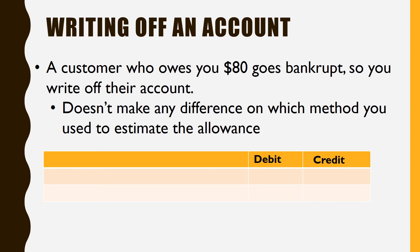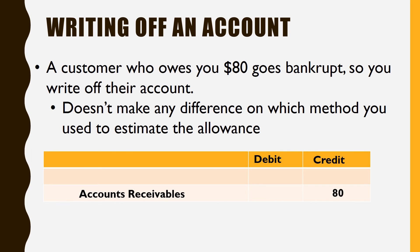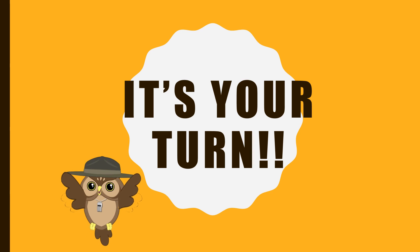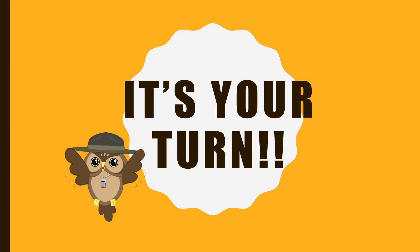If you've watched these in order, you've already heard about writing off an account, so I'll go over that very quickly. All we're going to do is reduce the accounts receivable by the amount we're not going to collect and reduce the allowance for bad debts, because we already accounted for that. The main thing is it doesn't make any difference which method you use to estimate your allowance — you'll write it off exactly the same way. Practice, practice, practice. It's easier than it looks. Thanks.